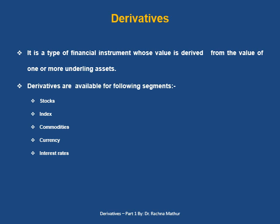Derivatives are available for the following segments in India. Stock derivatives include stocks of FMCG companies like HUL, ITC, and Britannia, as well as stocks from the IT sector like Infosys, HCL, and Wipro.